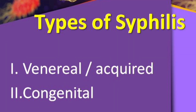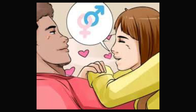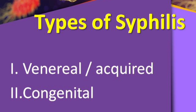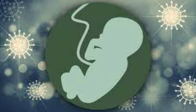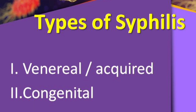There are two types of syphilis. One is venereal or acquired syphilis — acquired through sexual contact. The other is congenital syphilis, where an affected mother transmits the infection through the umbilical cord or placenta to the baby. So congenital syphilis is mother-to-fetus transmission.